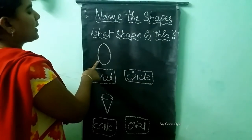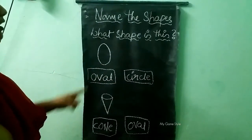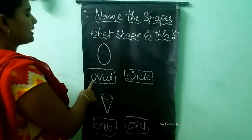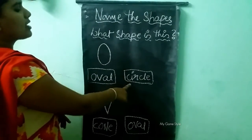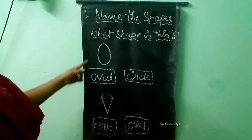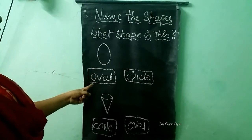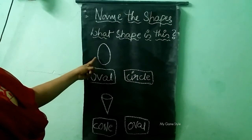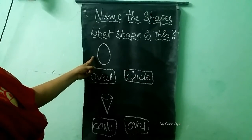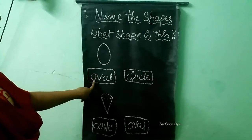What shape is this, children? Is it oval or circle? Tell me, children, what shape is this? Oval. This is an oval shape. So we need to tick oval.